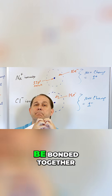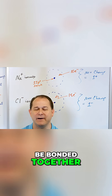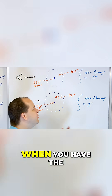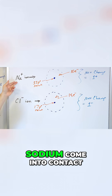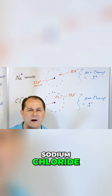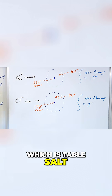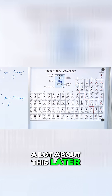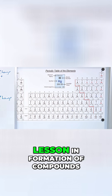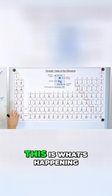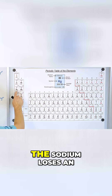They are going to be bonded together, and that's called an ionic bond. When you have sodium come into contact with chlorine, it's going to make sodium chloride, which is table salt. This is not a lesson in the formation of compounds, but this is what's happening.